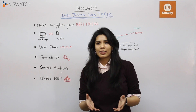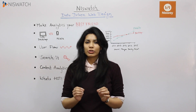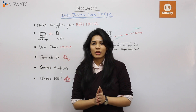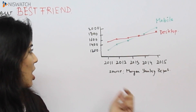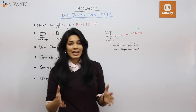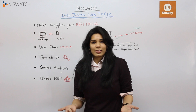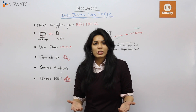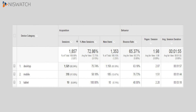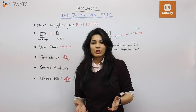Before I get into the analytics part, let me just say that it's almost criminal not to have a mobile-friendly website, because as you can see from the Morgan Stanley report, mobile usage to access websites has now superseded desktops. Using analytics, you can figure out who is coming onto your website and which device they're using. You can see a percentage of people accessing your website through mobile, tablets, or desktops, and this can help you design your website accordingly.